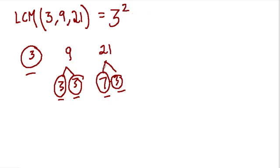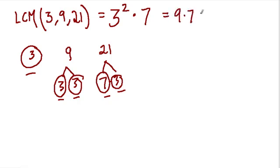Although 3 and 9 don't require a factor of 7, 21 does. So to make 21, we also need to include that factor of 7. The least common multiple of these three numbers is 9 times 7, which is 63.